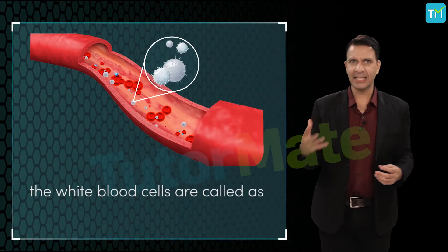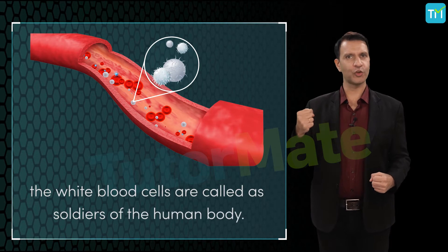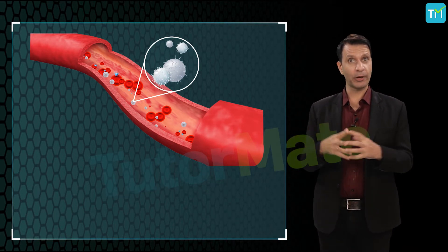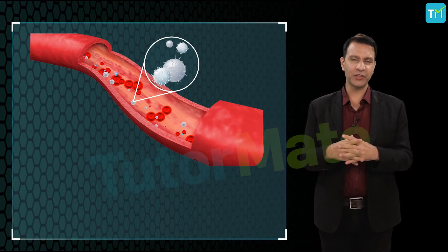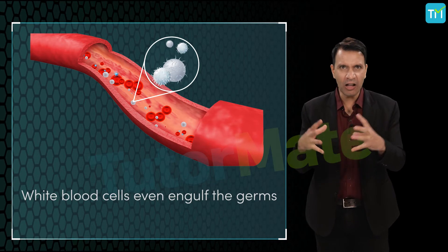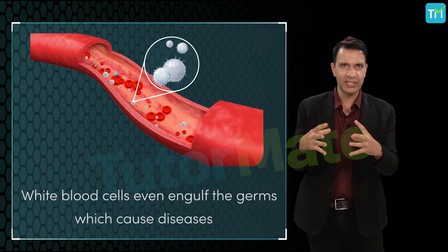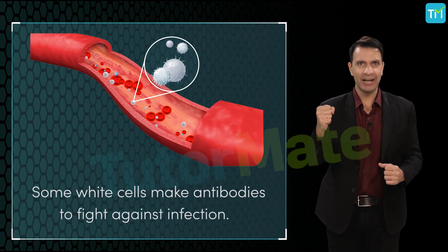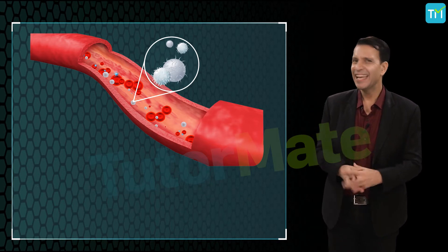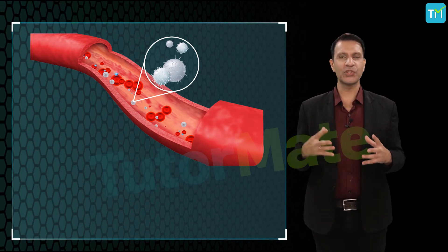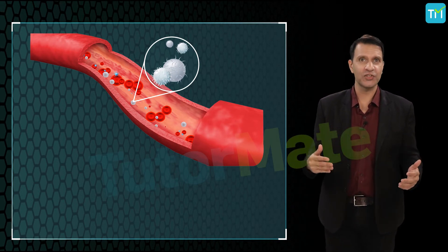The white blood cells are called the soldiers of the human body. This is because they protect the human body from the attack of pathogens. Some white blood cells even engulf the germs which cause diseases, and some white cells make antibodies to fight against infection. In simple words, white blood cells strengthen our immune system and keep infections at bay.